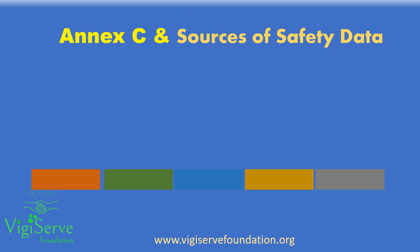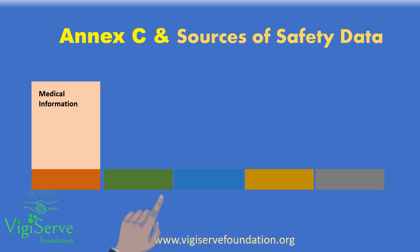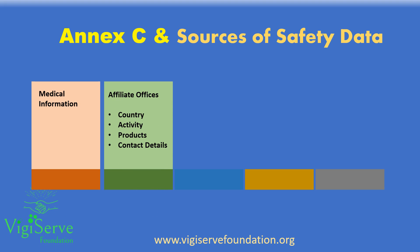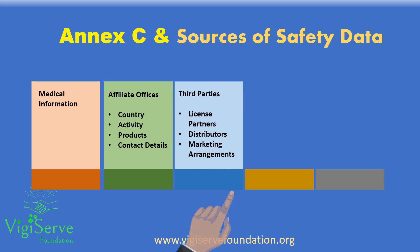The description of the main units for safety data collection should include all parties responsible, on a global basis, for solicited and spontaneous case collection for authorized products. This should include medical information sites as well as affiliate offices, and may take the form of a list describing the country, nature of the activity and the product if the activity is product-specific, and providing a contact point, address, telephone and email for the site. The list may be located in the annexes of the PSMF. Information about third parties, i.e. license partners or local distribution or marketing arrangements, should also be included in the section describing contracts and agreements.